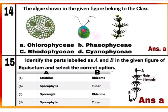Question 15: Identify parts labeled as A and B in the given figure of Equisetum and select the correct option. Equisetum is a pteridophyte belonging to class Sphenopsida. The plant body is differentiated into stem, leaves, and roots. Adventitious roots develop in whorls over the nodes of the rhizome, and aerial branches develop terminal strobili which occur only on fertile branches. In the figure, A is strobilus and B is rhizome. Mark A as the correct answer.